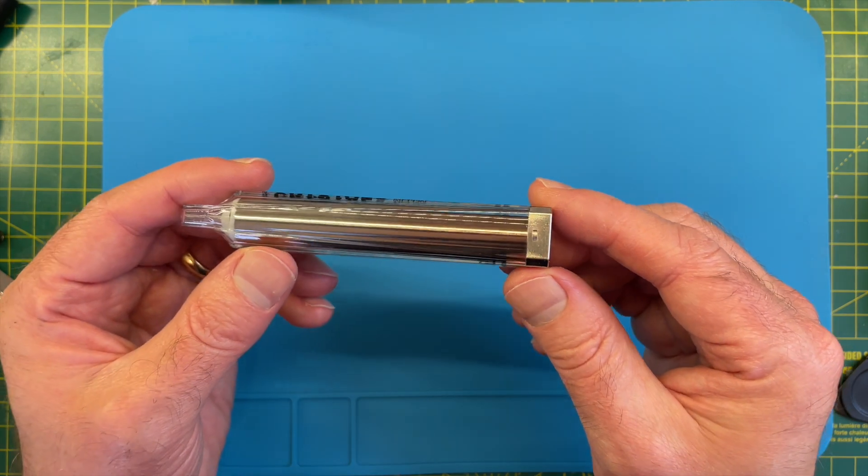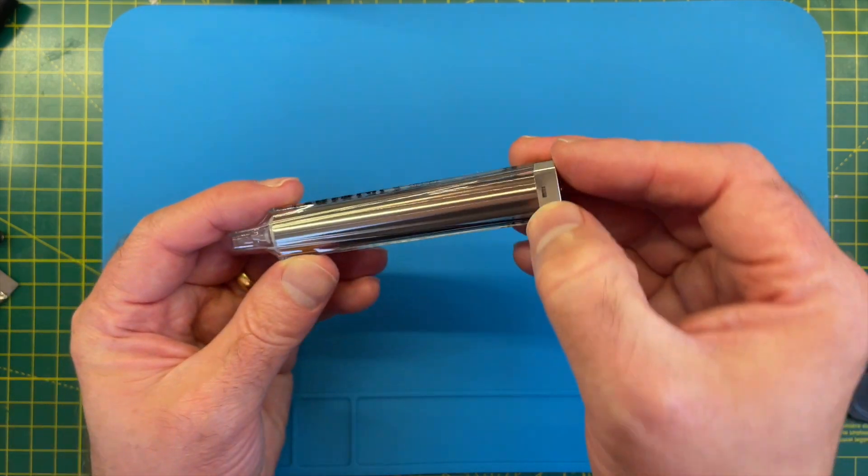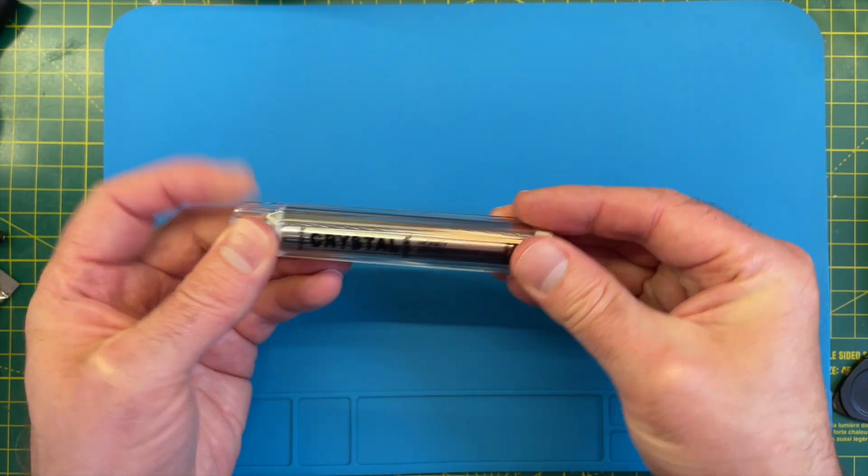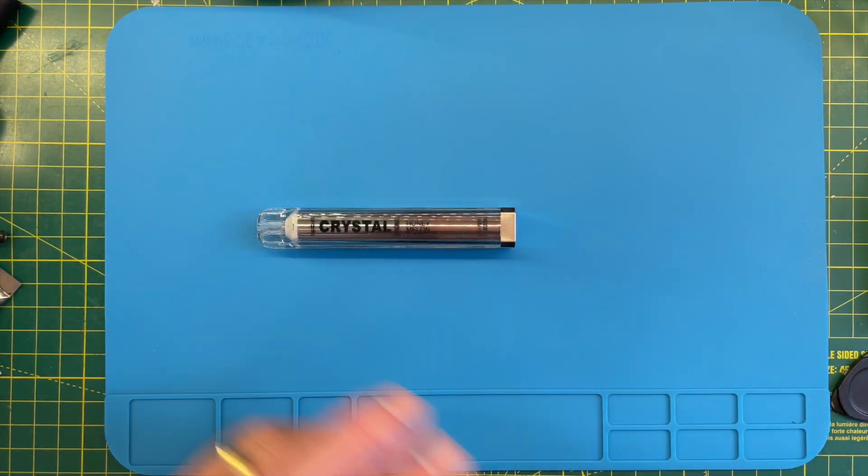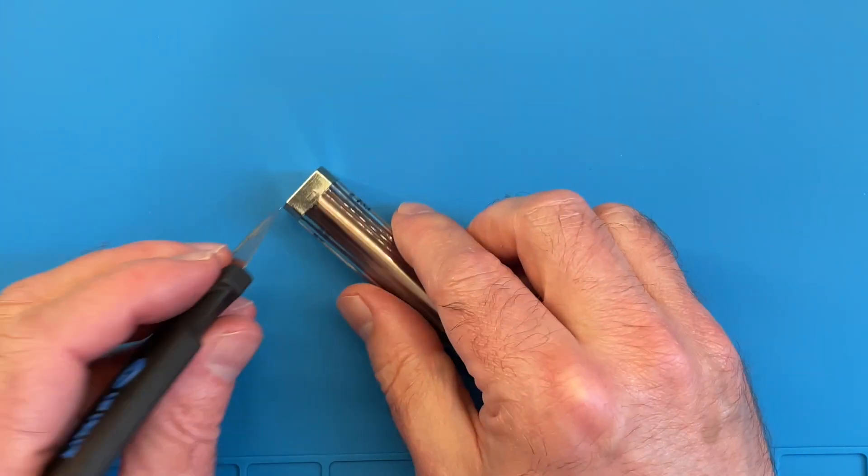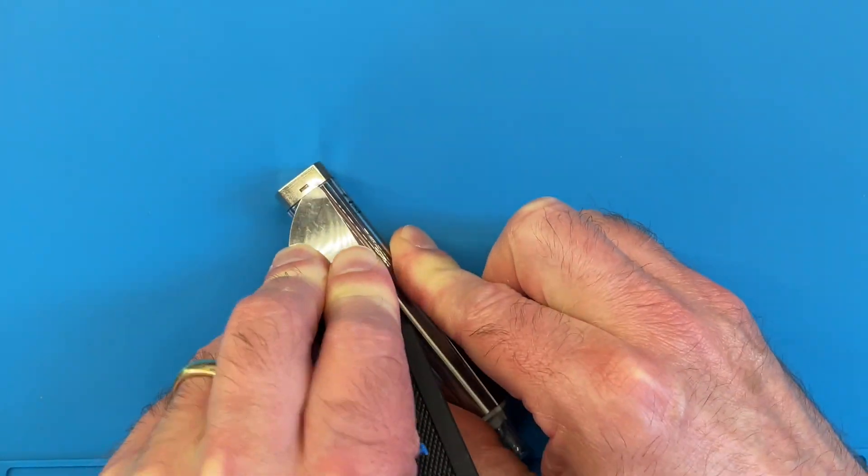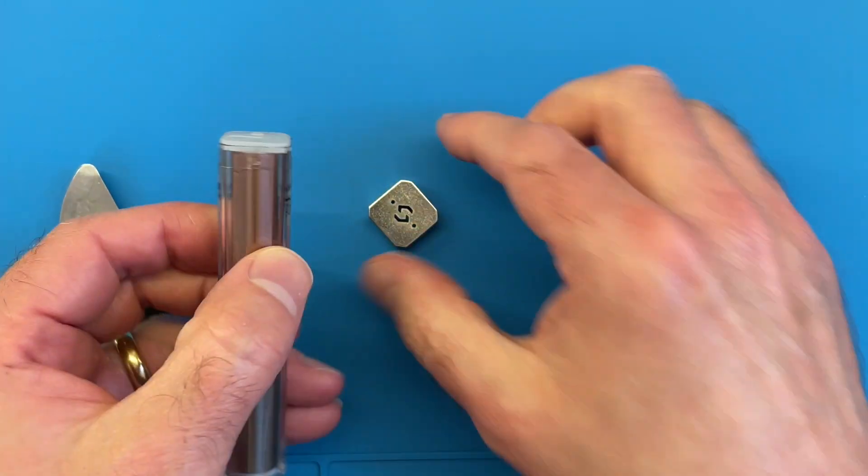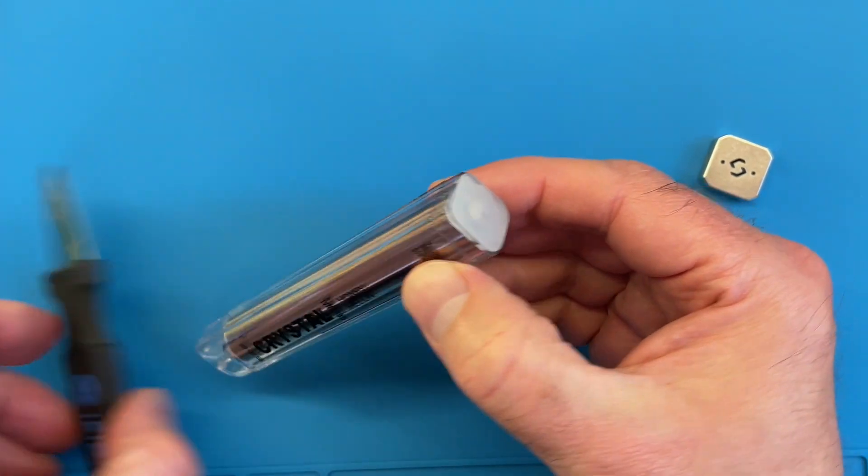So it should be fairly straightforward. Looks like this just clips on the end. So let's try and get into this. So that's the end cap removed.